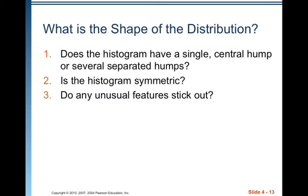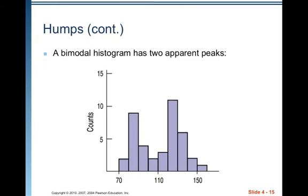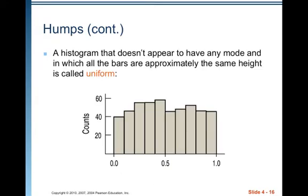What is the shape of the distribution? Does the histogram have a single central hump or several separated humps? Is the histogram symmetric? Do any unusual features stick out? A hump in a histogram is called a mode — it's where you have a large number of observations. A histogram with one main peak is dubbed unimodal. Histograms with two peaks are bimodal. Histograms with three or more peaks are called multimodal.